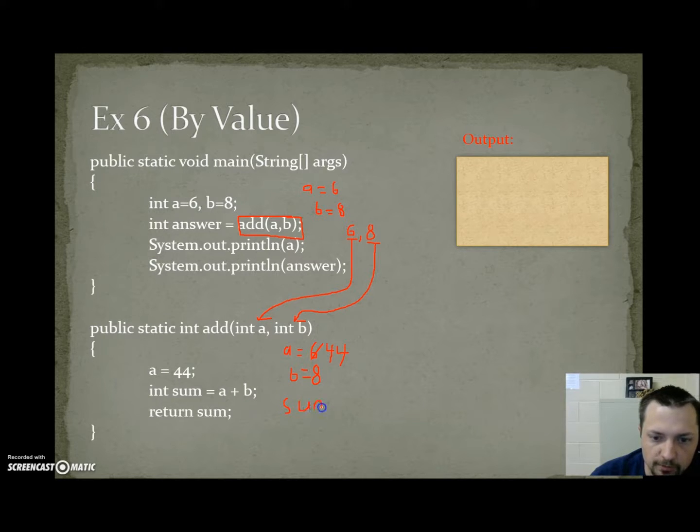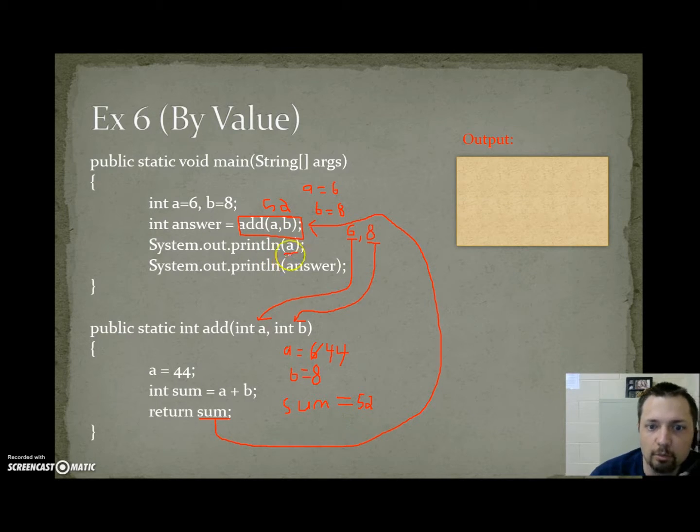sum is equal to 52. We send back sum, which is the value 52. Down here, when we print off a, we're printing the value of a that main has, which is still 6. The a that was changed to 44 was the a that was owned by add. Main's 6 value is still a. Then we print answer, which is 52.